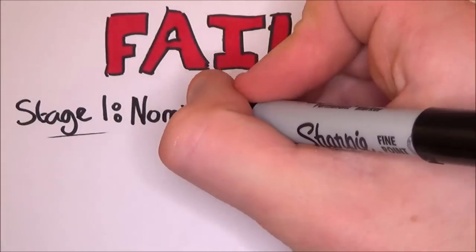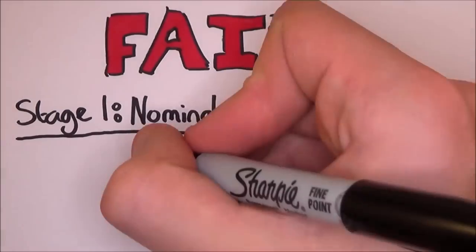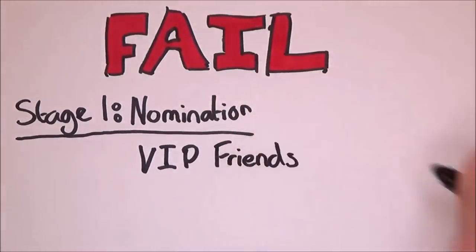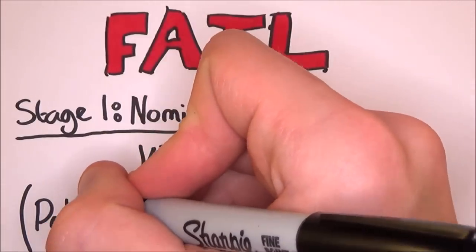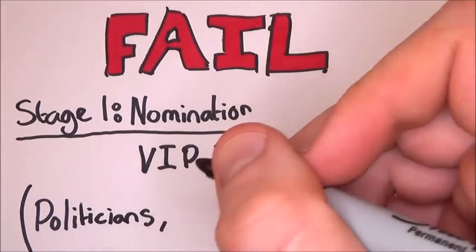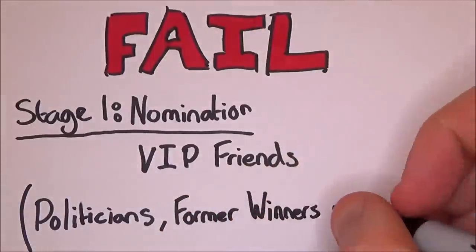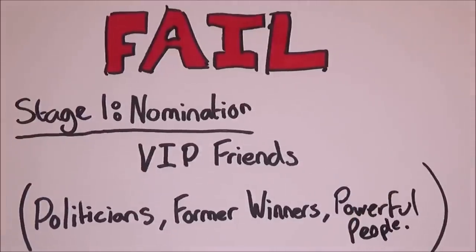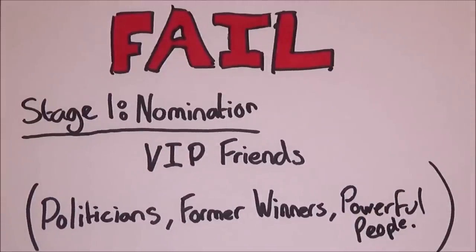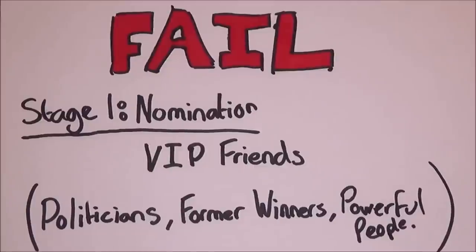Stage one is nomination, and this is what you need to do. Become friends with people in high places. Only a few people are actually allowed to nominate people for a Nobel Prize. This is why being good with the public is so important. You need to be known by powerful people. Try and make friends with members of national governments, members of the Permanent Court of Arbitration and of the International Court of Justice, former Nobel Peace Prize winners, people like that.